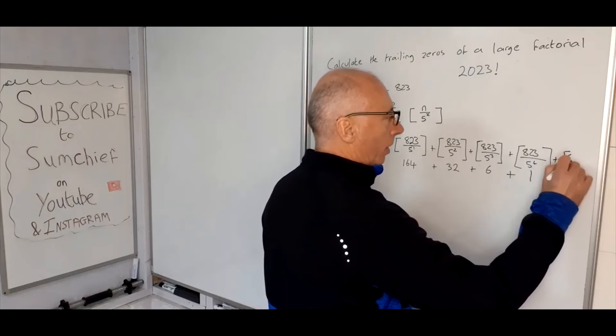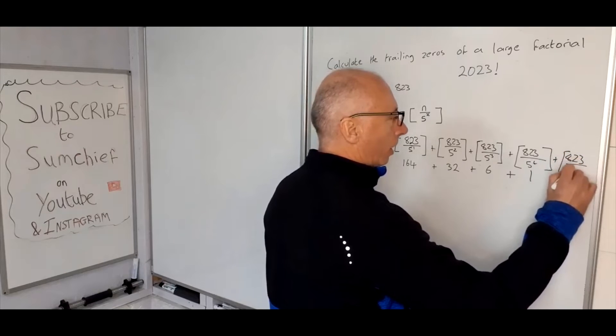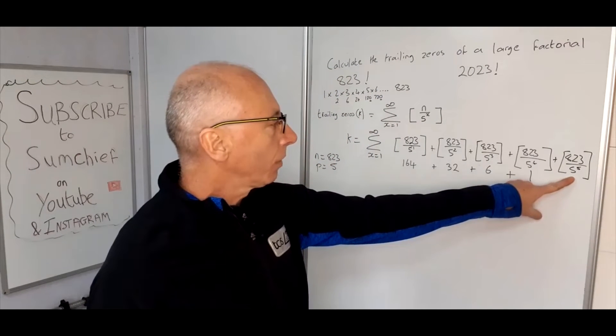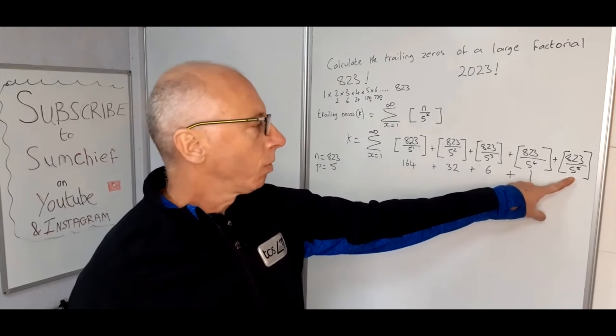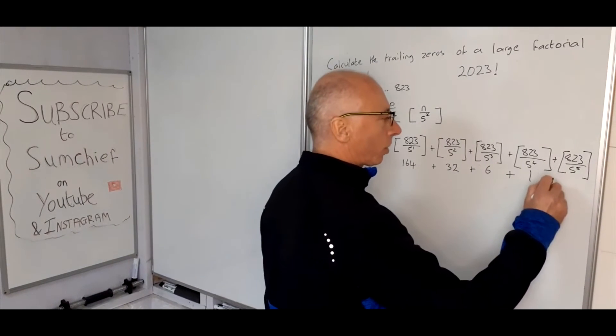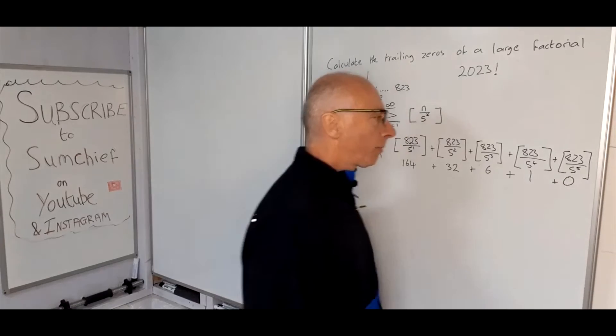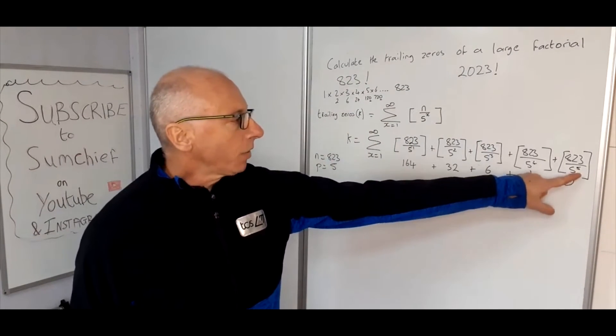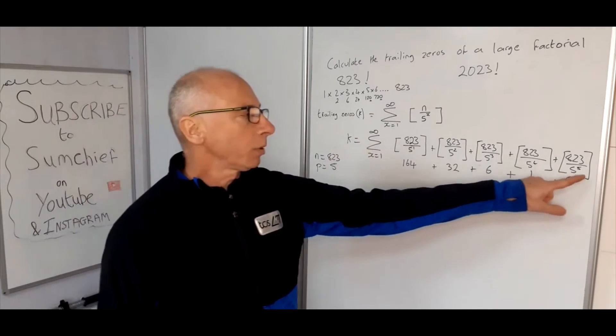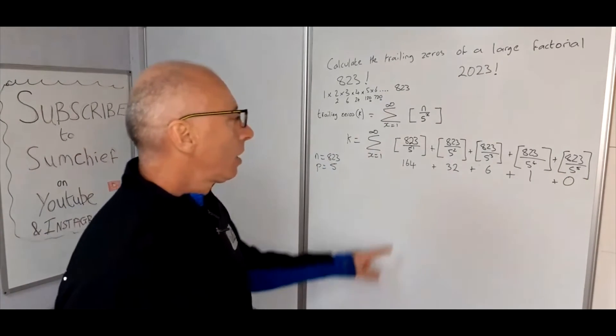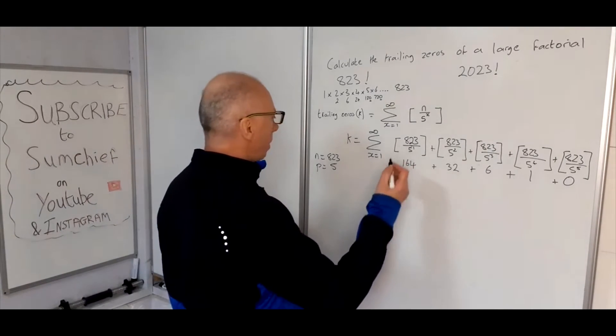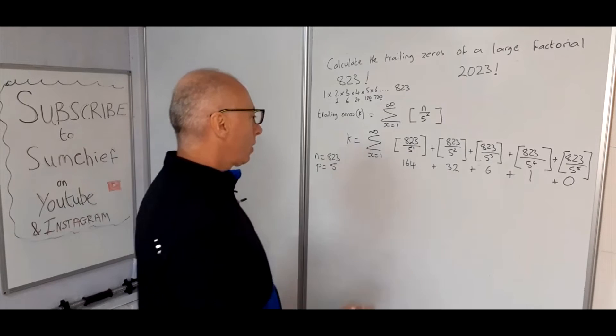And then on to the next one. 823 divided by 5 to the power of 5. 5 to the power of 5 is 625 times 5, which is 3125. So in terms of the greatest integer function, this is just going to yield a zero. As we got to a zero here with 5 to the power of 5, using the summation formula, we're not going to need to progress any further. So now what we need to do is just add up these numbers here, and that will give us our trailing zeros in 823 factorial.